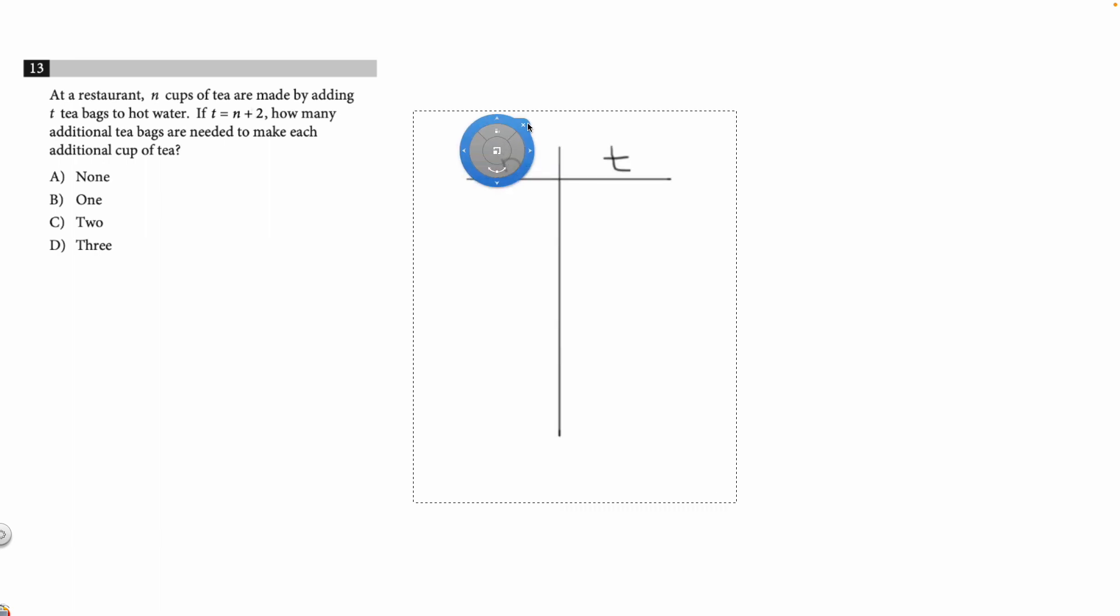We can start by drawing a table with n as the cups of tea that we can make, and t as the tea bags that we need.